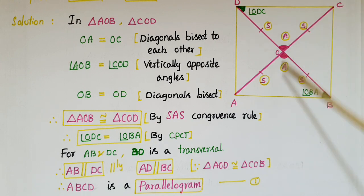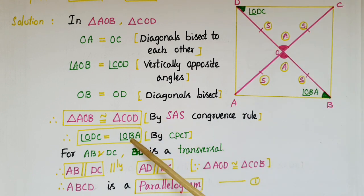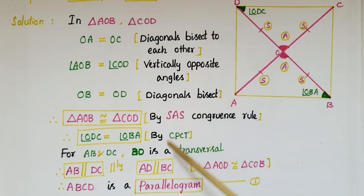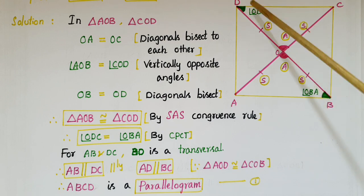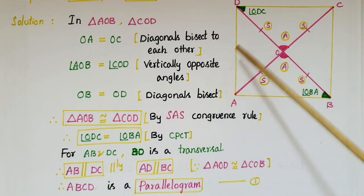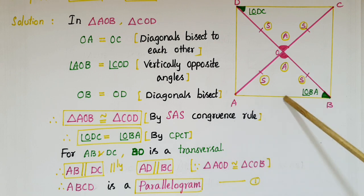By SAS congruence, triangle AOB is congruent to triangle COD. Therefore angle ODC equals angle OBA by CPCT. These are alternate interior angles for lines CD and AB with transversal BD, so AB is parallel to CD. Similarly, we can prove AD is parallel to BC. Therefore ABCD is a parallelogram, since opposite sides are parallel.